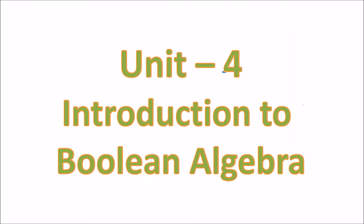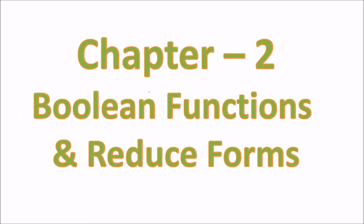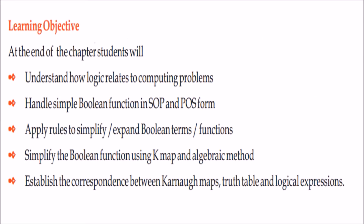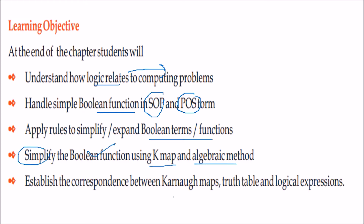We are looking at unit number 4, that is introduction to Boolean algebra, and in this we are taking chapter 2, that is Boolean functions and reduced forms. What we are going to see here is how logic relates to computing problems, how we can handle simple Boolean functions in sum of product and product of sum form. We will apply rules to simplify or expand the Boolean terms or functions, then use K-map and algebraic method to simplify the Boolean function, and the correspondence between K-map, truth table, and logical expressions.